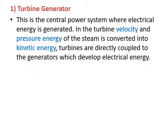The turbine generator is the central power system and the heart of any power plant. In the turbine, the velocity and pressure energy of the steam is converted into kinetic energy, and turbines are directly coupled to the generator. If the speed is 3000 RPM, it is directly coupled. If not, a gearbox is required to bring the speed to 3000 RPM.